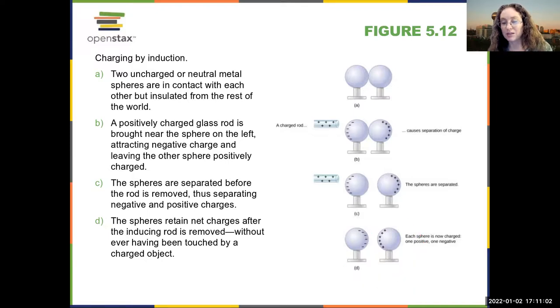So you end up with more negative charges on this sphere and more positive charges on that sphere. And because the charges can move around freely in the conductor, you end up with more negative charges on this side and more positive charges on that side, because now the two spheres are attracted to each other and the positive charges in one sphere want to move close to the negative charges in the other.